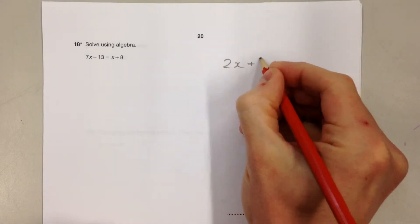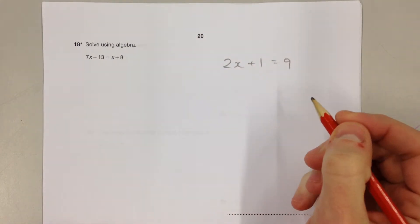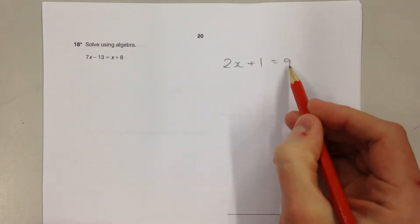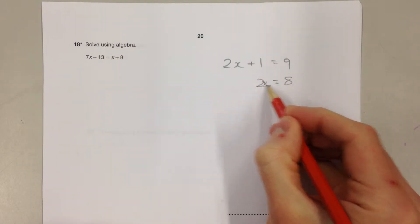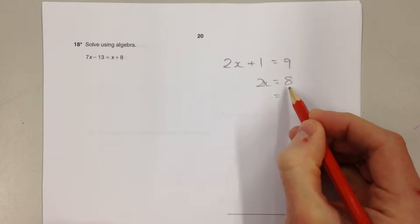With a simple two-step equation like this, they're easy to solve because you just work backwards from the 9. You take away the 1 and then you divide the 8 by the 2 to get that x equals 4.